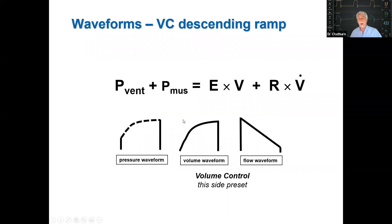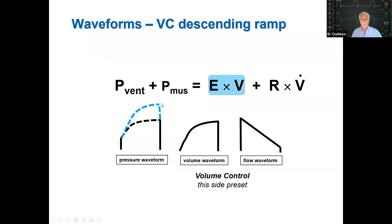Not everybody uses constant flow for volume control. At our institution, we tend to use a descending ramp flow, sometimes called decelerating flow. With a particular tidal volume and a descending ramp flow waveform, the pressure waveform reflects the equation of motion. If elastance increases, we see a larger end-inspiratory pressure. If the flow is set to zero at end-inspiration, the resistive term goes to zero and the end-inspiratory pressure equals the plateau pressure — so you don't even need an inspiratory hold, which some sick patients can't tolerate.